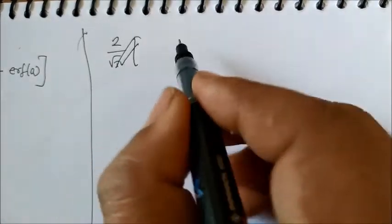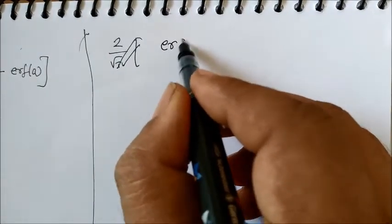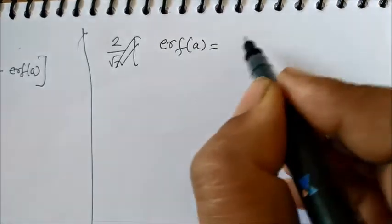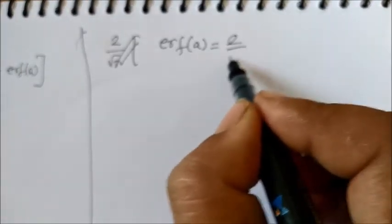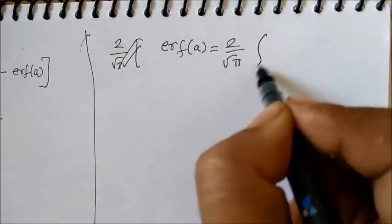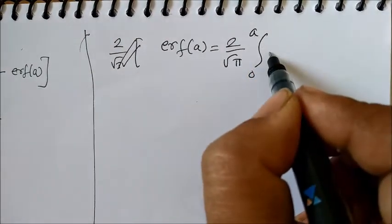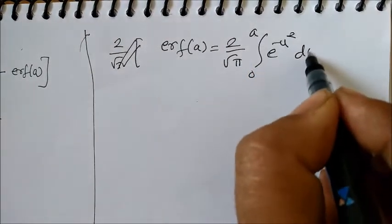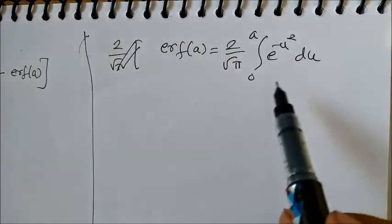Okay, let me explain what is erf of a. So erf of a will be 2 by root pi, integral 0 to a, e to the power minus u square du.